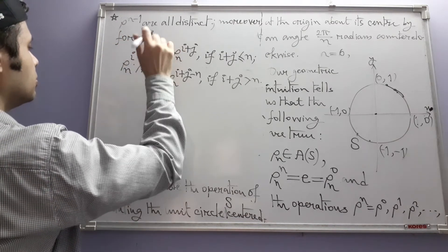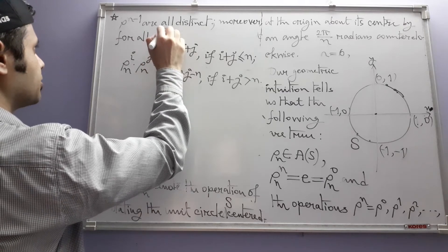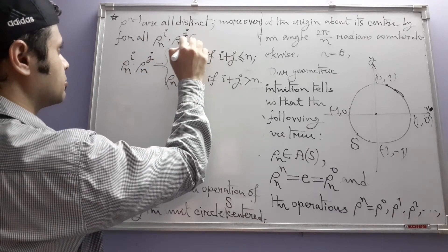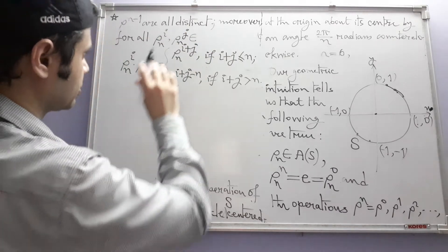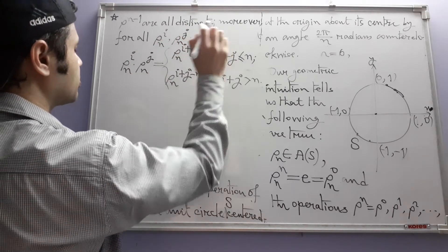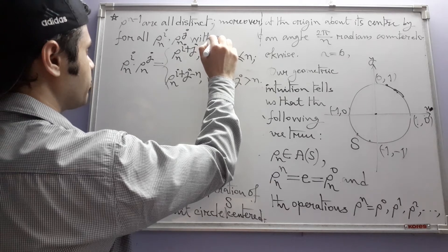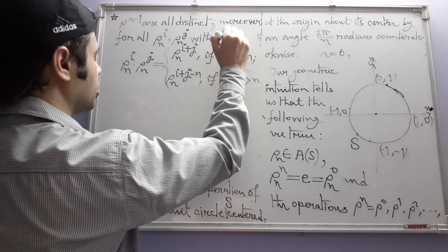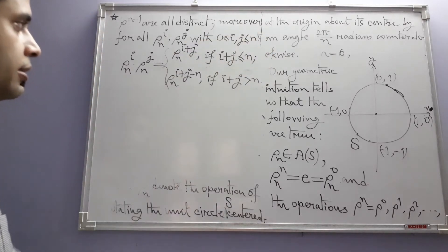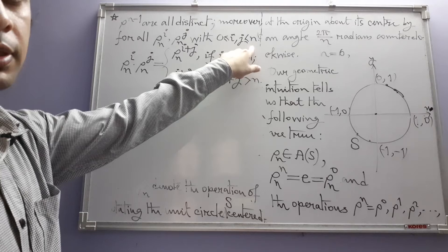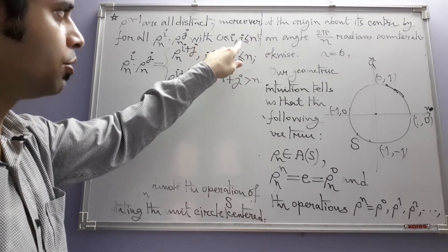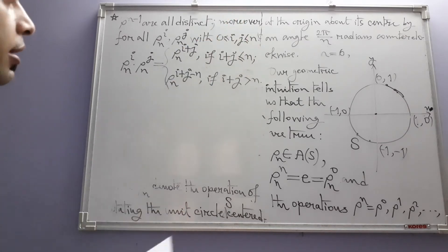This holds for all ρₙⁱ and ρₙʲ where both i and j lie between 0 and n. This notation means both i and j satisfy 0 ≤ i, j ≤ n.